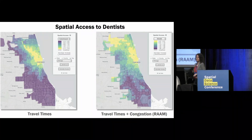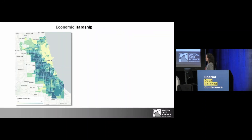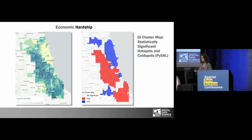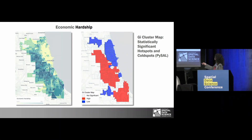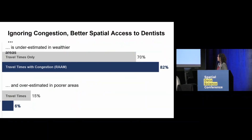These happen to be the wealthier areas of town, while the other areas are poorer. Let's take a quick look at how these two models compare taking economic hardship — wealthier and poorer areas — into account. Here's a map of economic hardship for Chicago. The yellow area is the wealthier part of town, and this cluster map teases out these patterns better, with low economic hardship in blue and hotspots of higher poverty in the west and the south.